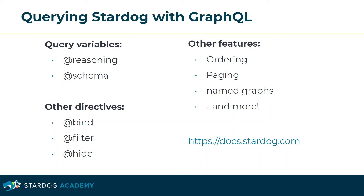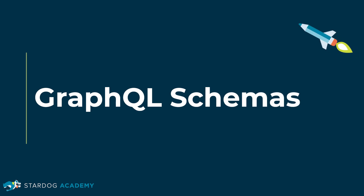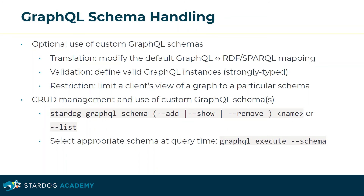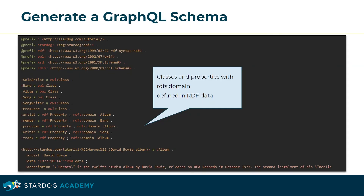This concludes the section on querying Stardog with GraphQL. This section is about GraphQL schemas. Stardog provides flexible GraphQL schema handling. You can optionally use custom GraphQL schemas for things like translation, where you'd want to modify the default GraphQL to RDF or SPARQL mapping, for validation to define valid GraphQL instances, or restriction to limit a client's view of a graph to a particular schema. Stardog also provides CRUD management and use of custom GraphQL schemas. You can also select the appropriate schema to use at query time. Stardog includes a feature that allows you to generate a GraphQL schema based on the classes and properties that you've defined in your turtle file.